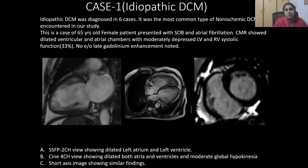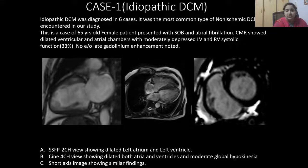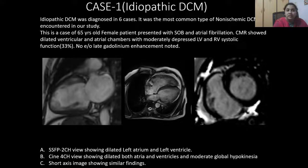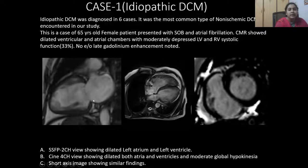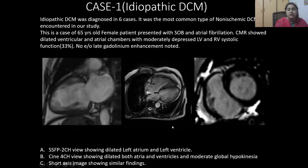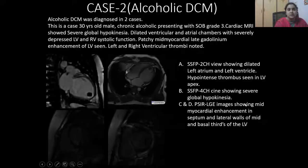Case 1 — Idiopathic dilated cardiomyopathy: diagnosed in 6 cases and the most common type of non-ischemic DCM encountered in our study. A 65-year-old female presented with shortness of breath and atrial fibrillation. Cardiac MRI showed dilated ventricular and atrial chambers with moderately depressed LV and RV systolic function and no evidence of late gadolinium enhancement. The SSFP two-chamber view shows dilated left ventricle and left atrium; the cinematic four-chamber view shows dilated atria and ventricles with moderate global hypokinesia; and short-axis imaging shows similar findings.